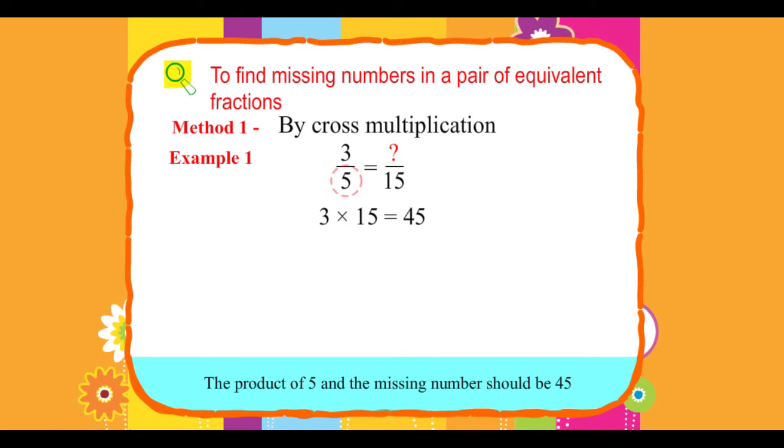The product of 5 and the missing number should be 45. Thus, by reverse multiplication, 45 divided by 5 equals 9.